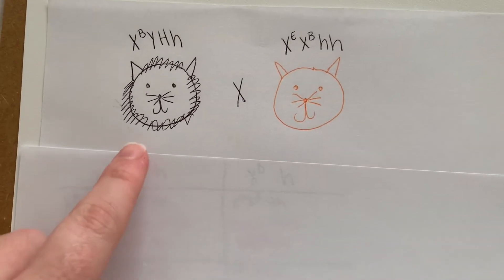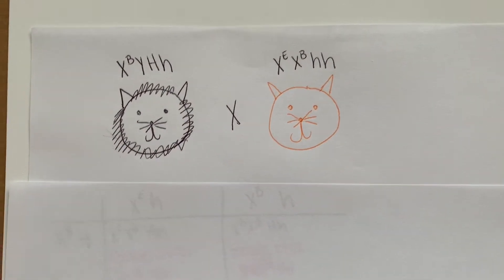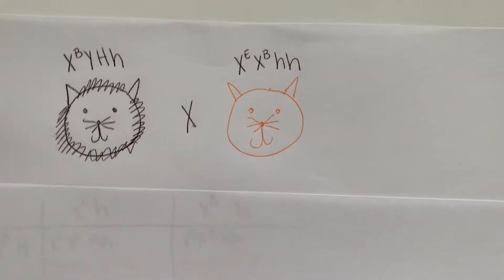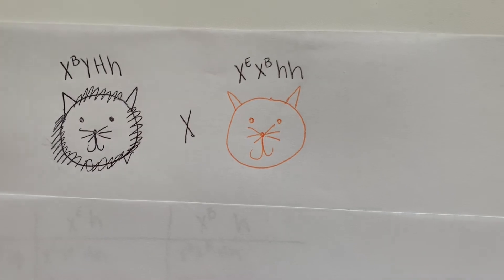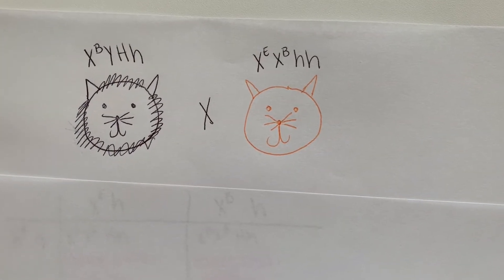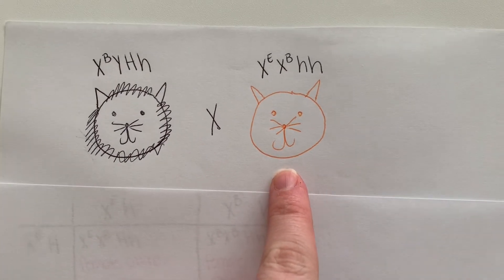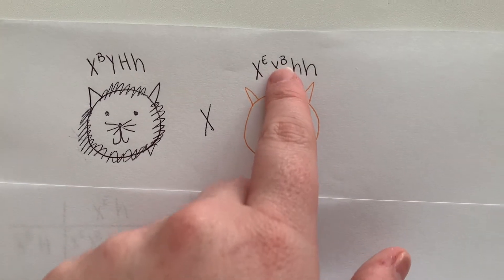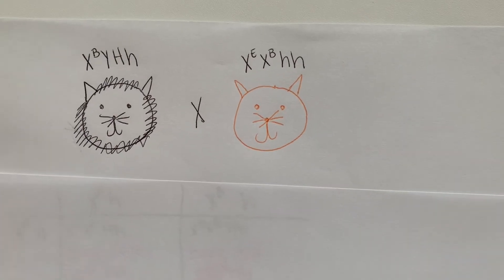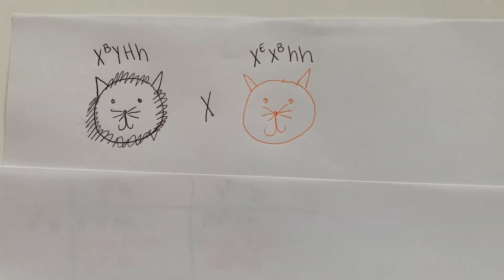Here we have a long black-haired cat with genotype X^B Y, Hh, and it mates with a yellow short-haired female with genotype X^E X^B, hh. She will be homozygous, but due to X inactivation she is just a yellow cat — the X^B is inactivated — so she is a carrier and will carry that on throughout her offspring.